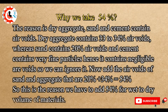Why do we take 54%? The reason is dry aggregate, sand, and cement contain air voids. Dry aggregate contains 33 to 34% air voids, whereas sand contains 20% air voids, and cement contains very fine particles so we can ignore its air voids. Adding the air voids of sand and aggregate: 20% plus 34% equals 54%. This is the reason we add 54% for wet to dry volume conversion.